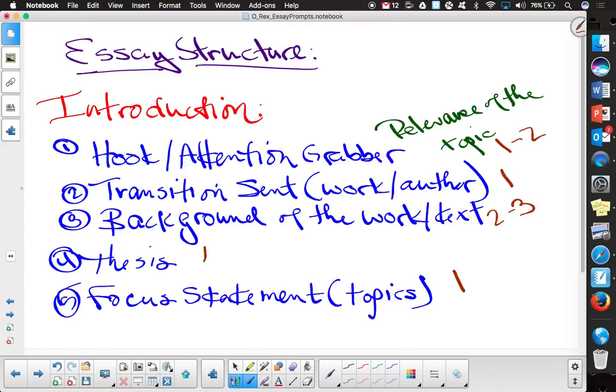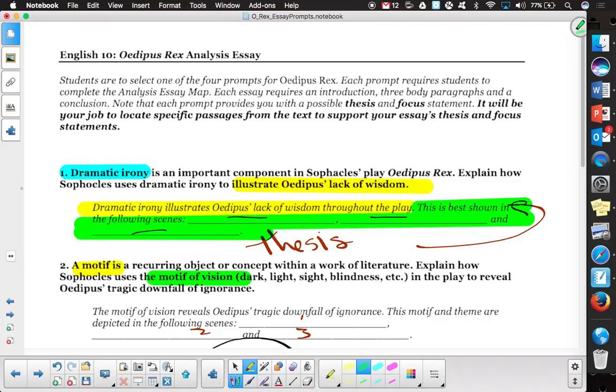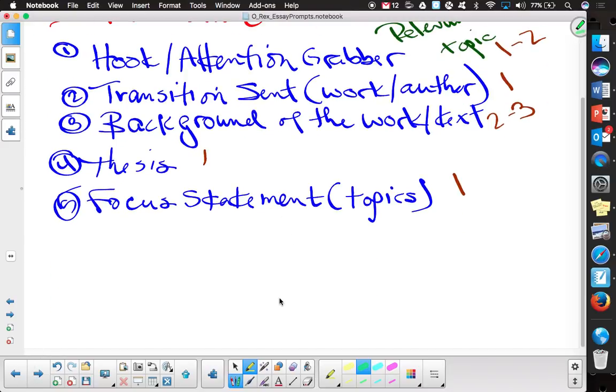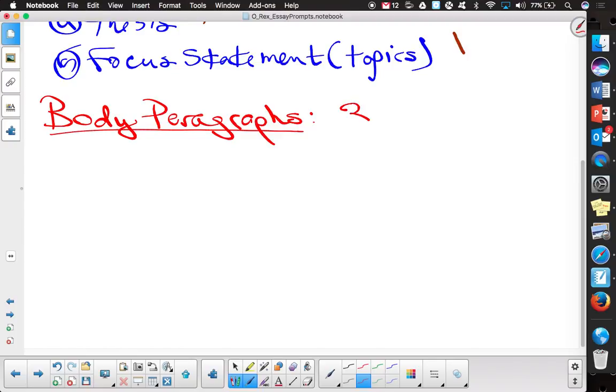And again, just like Luke said, number four and five, thesis and focus statement. All that stuff's right here. The very first sentence is your thesis. The second sentence then is your focus that's mentioning those subtopics. So it's pretty straight and forward in that way. If you have three subtopics, how many body paragraphs are you going to have? Three. Okay. For your body paragraphs, we're just going to write this one time, but it's understood that it would get repeated multiple times. Body paragraphs. Knowing that this is going to happen a grand total of three times.